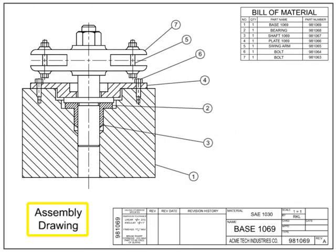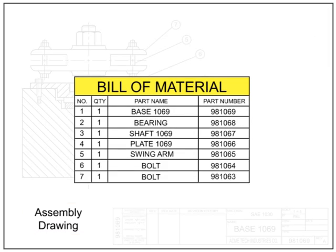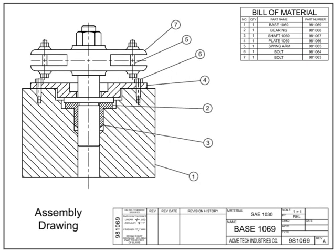An assembly drawing shows two or more separable parts joined to form a final product. The bill of material for an assembly drawing lists all the parts required to make up the assembly. Each part is given an item number, which is then referenced in the field of the drawing with a balloon for ease of location.